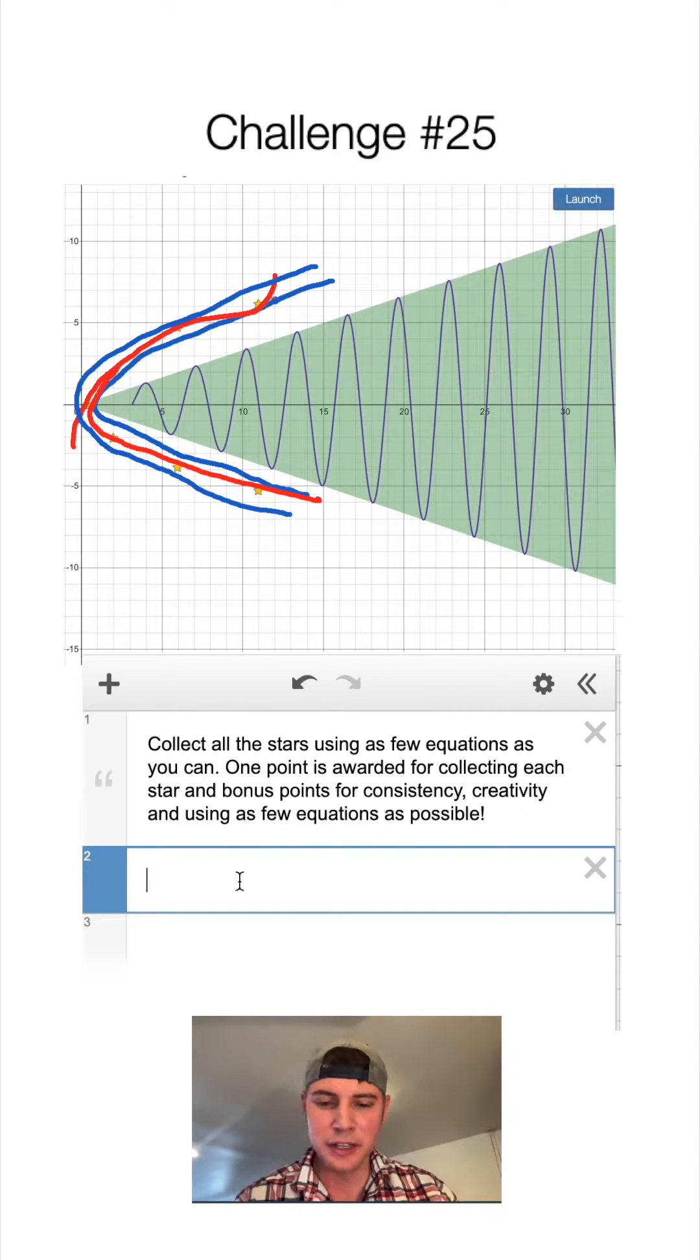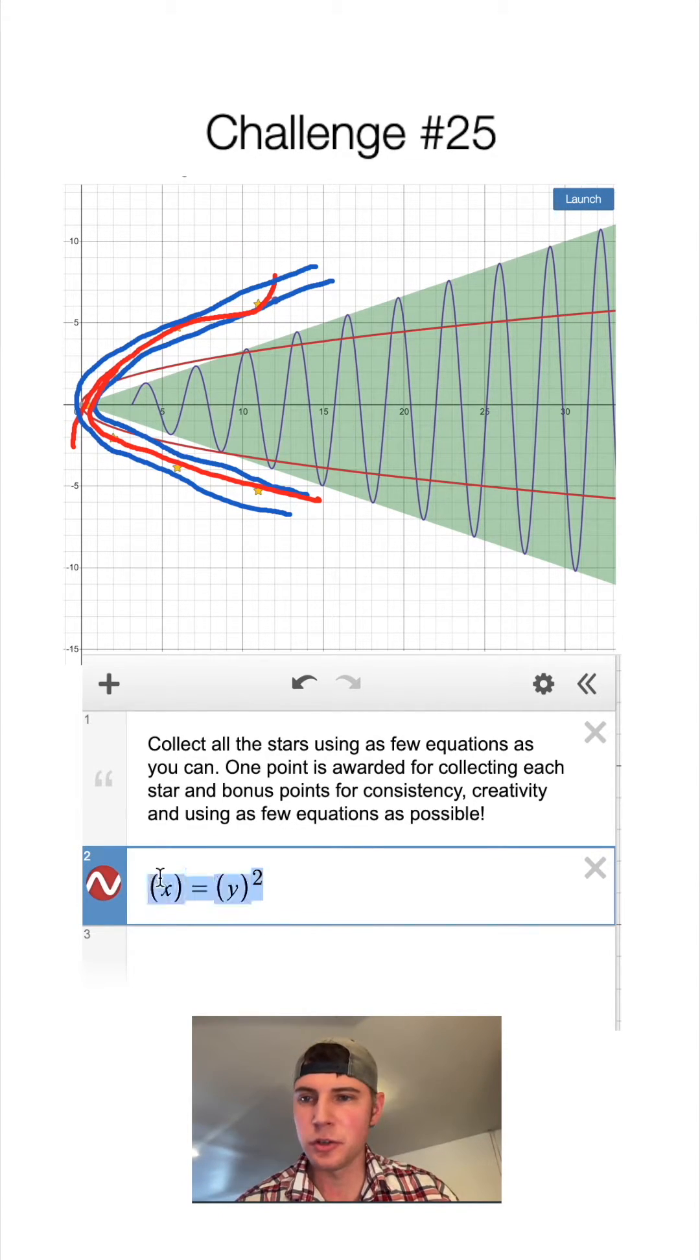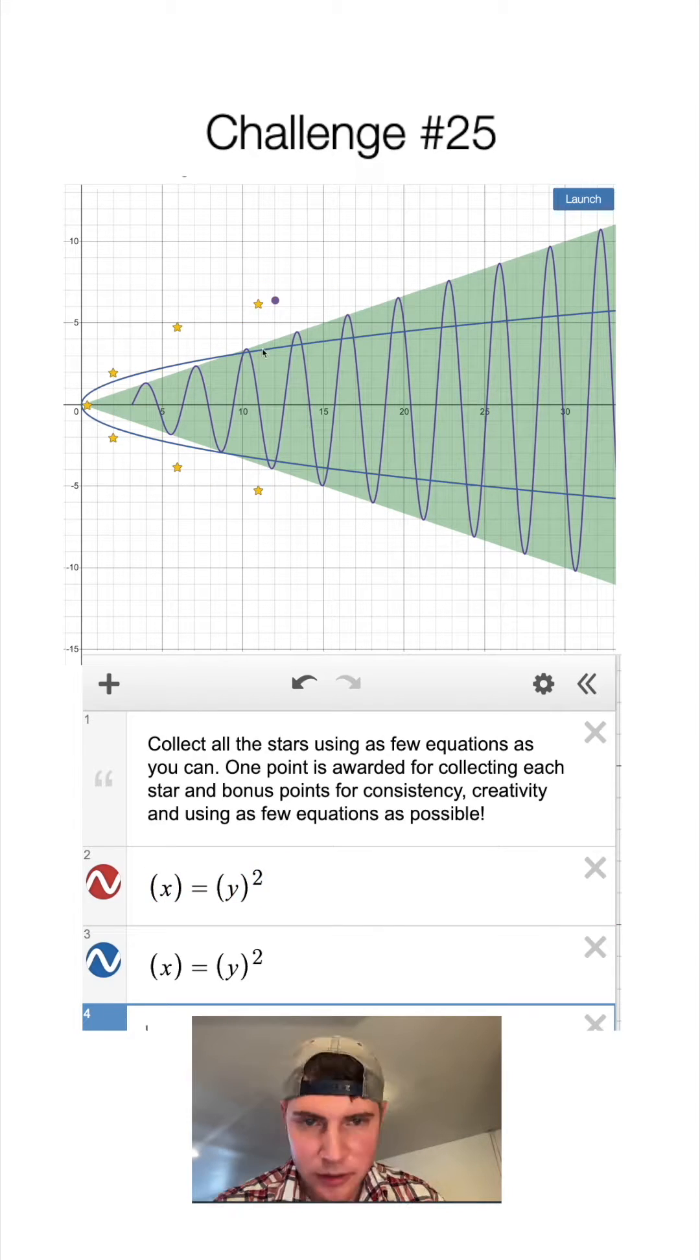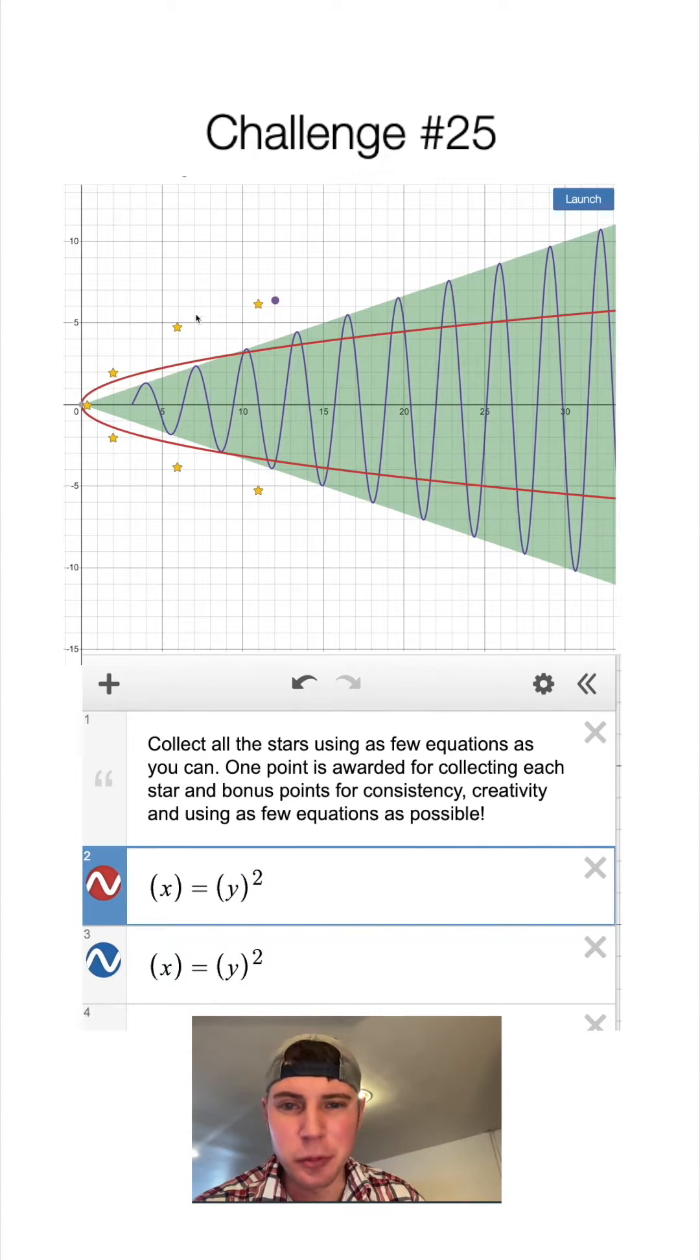A sideways parabola is X equals Y squared and then we're going to want two of those. I'm going to get rid of my drawings. So these are them down here. Let's do our outer parabola first.